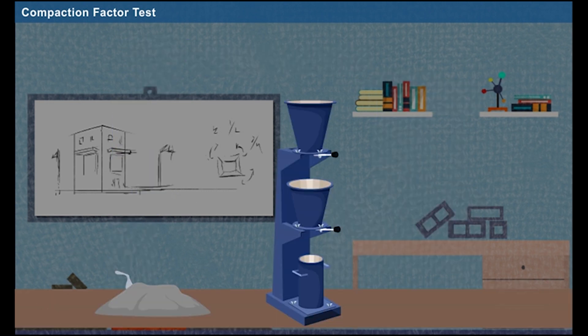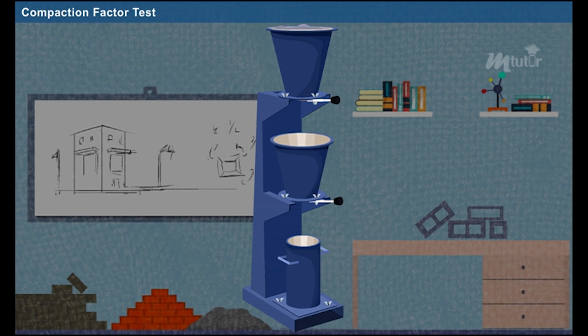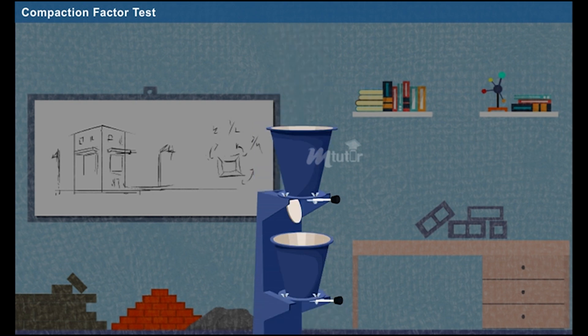Fill the fresh concrete on the top hopper using a trowel without compacting it. Then, the top hopper trap door is opened. Thus, the concrete falls on the lower hopper. Gentle tapping is done using a tapping rod to push the remaining concrete from the top hopper to the bottom hopper.